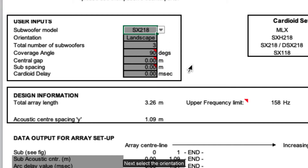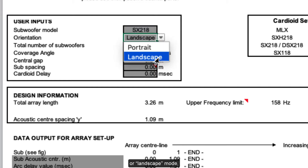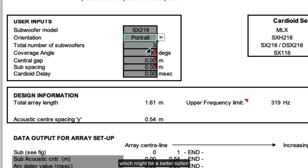Next, select the orientation that you intend to use. This can be flat on the horizontal or landscape mode, or upright portrait mode, which might be a better option if you have a large quantity of subs and limited space along the front of a stage.